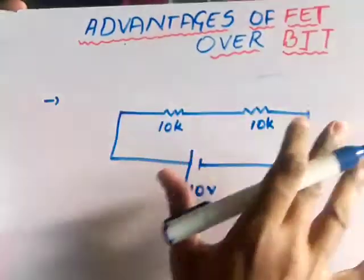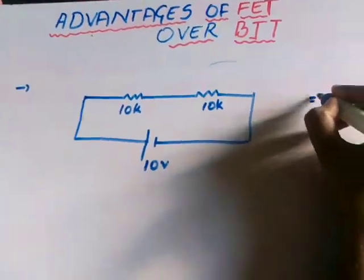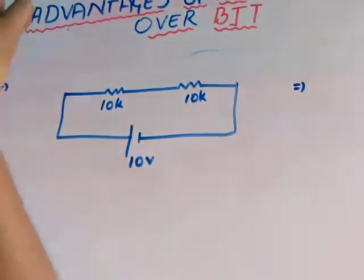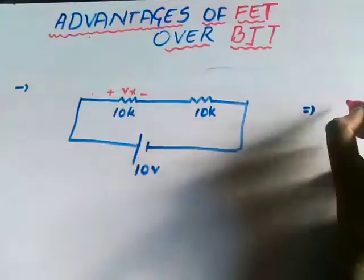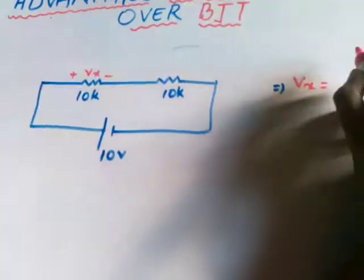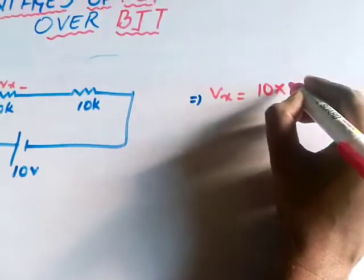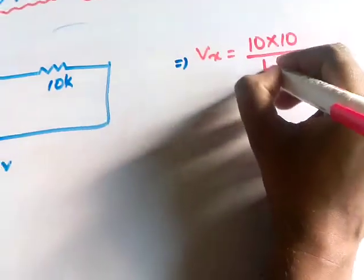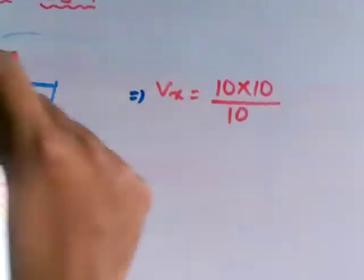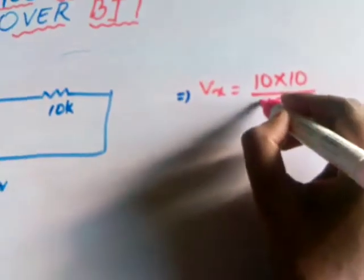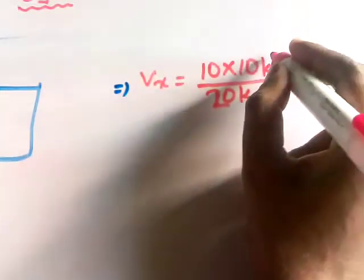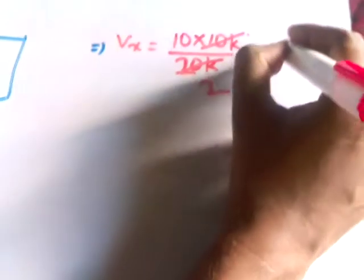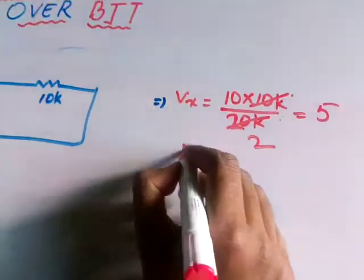By voltage division law, we can easily conclude that if you want to measure the voltage across this resistance — let us consider this as Vx — Vx is equal to the total voltage delivered by the source into the resistance where you are measuring the voltage divided by the total resistance, that is 10K plus 10K equals 20K. So Vx equals 5 volts.